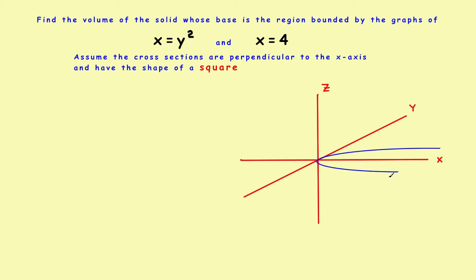The parabola is open on one end, so you need to restrict the region. The second equation, x equals 4, is a vertical line perpendicular to the x-axis through x equals 4. Adding that line restricts the region, giving you the shaded base of your solid, which then extends up and above.